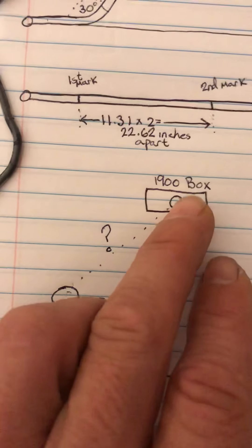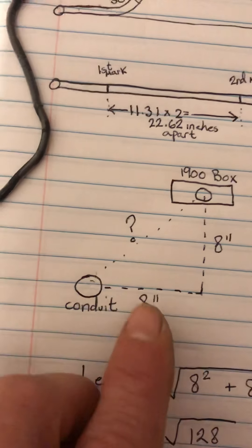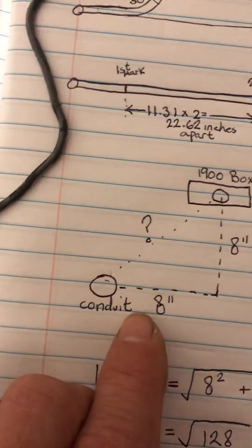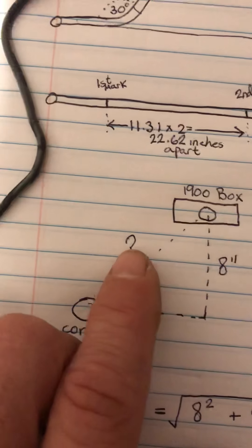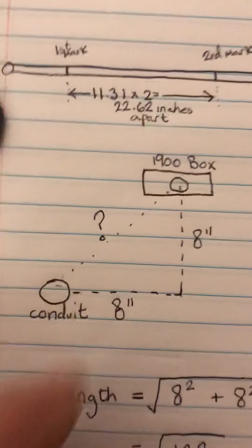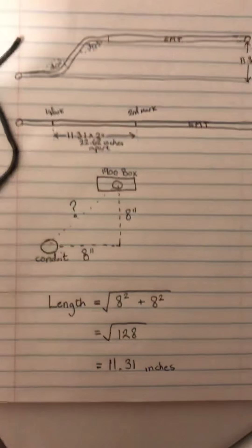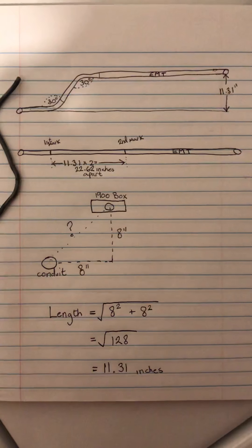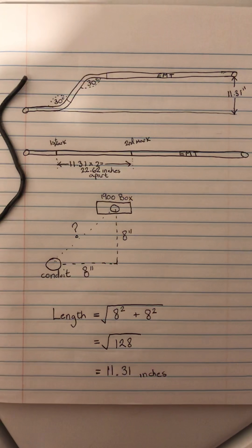you have to take into account that you've got two different measurements you need to make, and then you do your Pythagorean theorem off of that. I hope this video helped you guys out. Thank you.